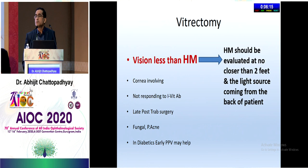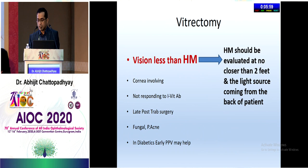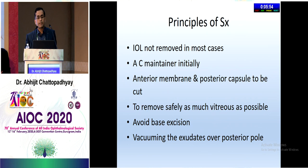Hand movement assessment should be done at no closer than two feet with the light source coming from behind the patient — moving a hand in front of the patient with front-lit conditions tests perception of light, not hand movement. Principles of surgery include avoiding IOL removal initially, placing an AC maintainer, cutting the posterior capsule, and removing as much vitreous as possible while avoiding aggressive vacuuming of exudates over the posterior pole.